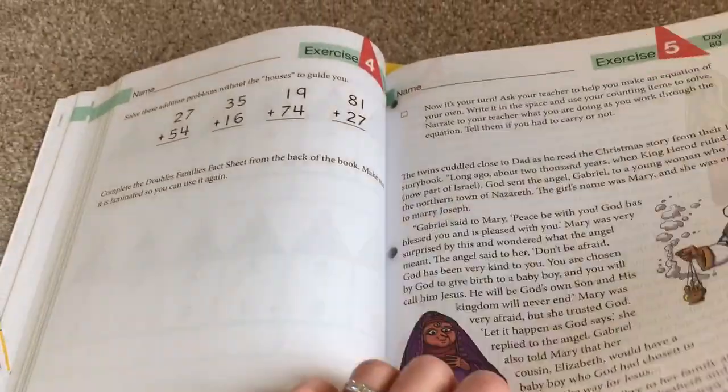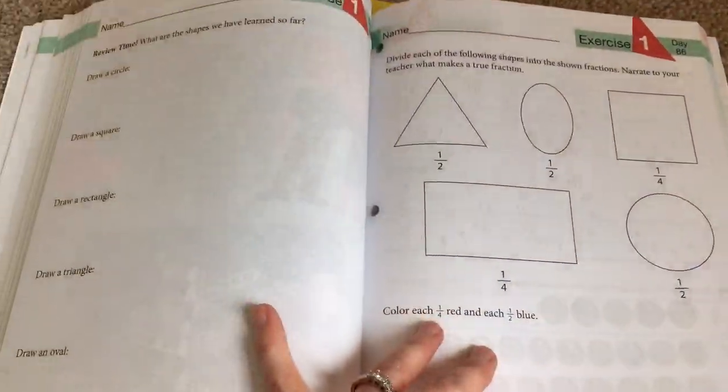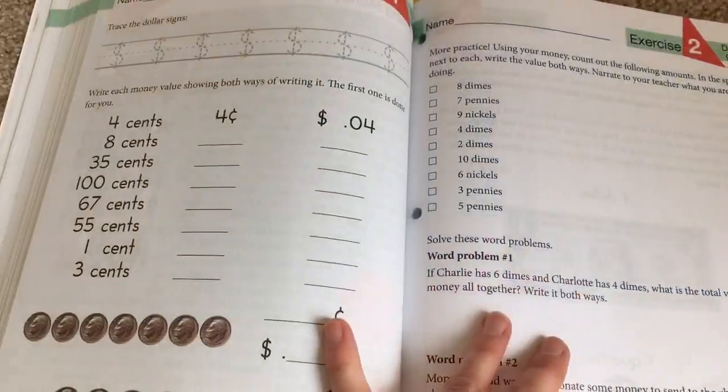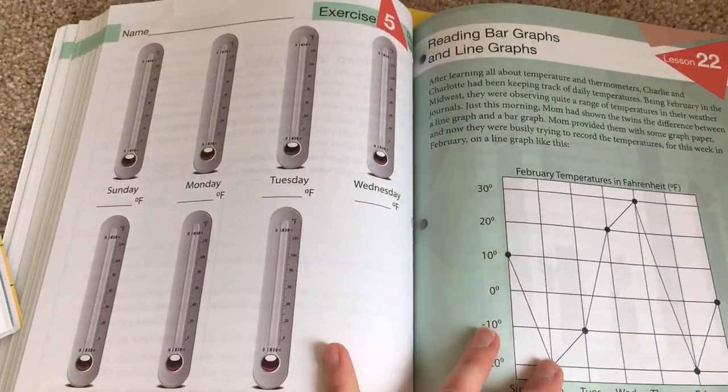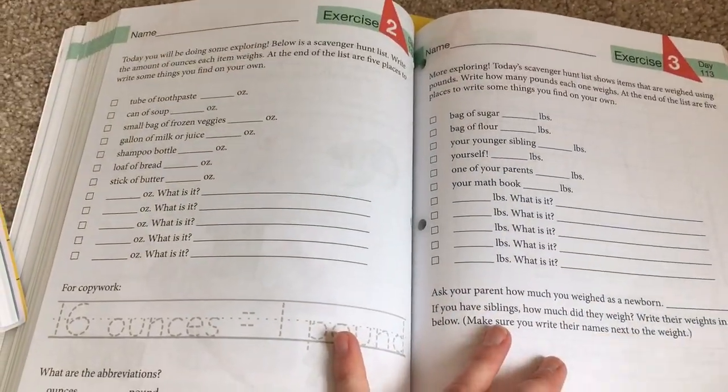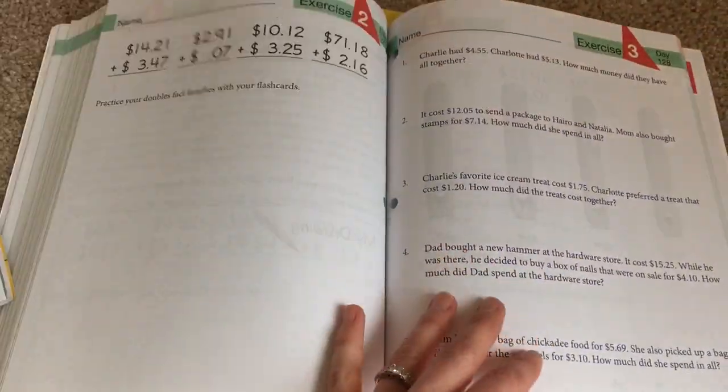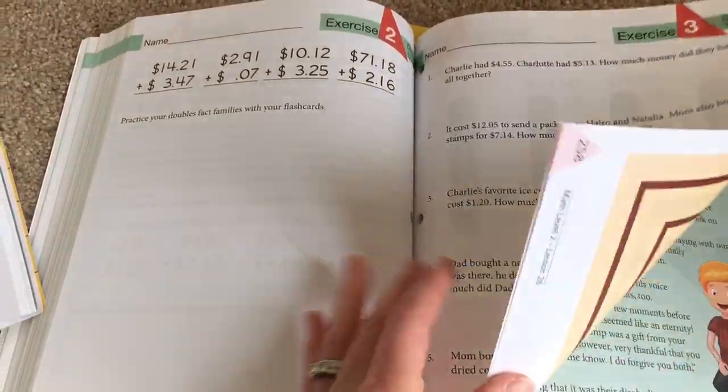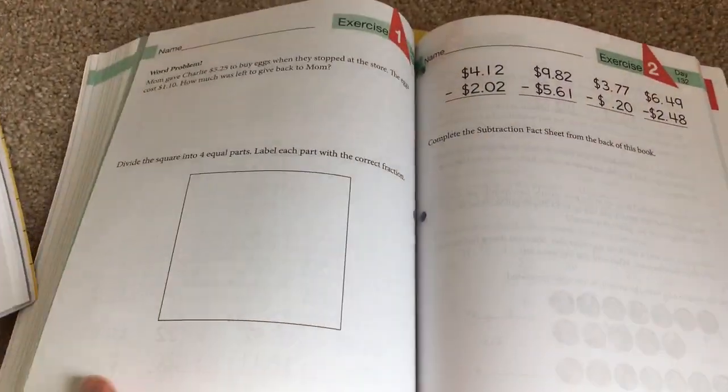It does explain things really well to the kids. There's a lot of different stories in here. They do have money too. It's just much more gentle and I think it's a lot easier overall. It doesn't seem to have - I mean there's some addition, but I don't feel like there's a lot of addition compared to the Abeka math.